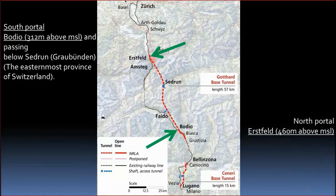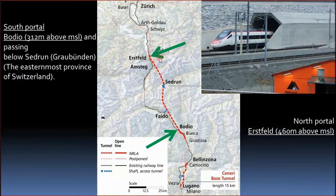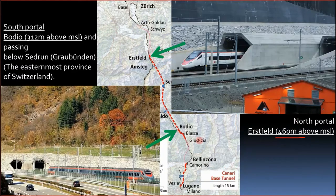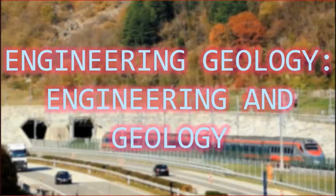The key connecting points are: the north portal at Erstfeld, which is 460 metres above mean sea level, and the south portal at Bodio.